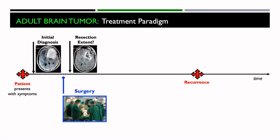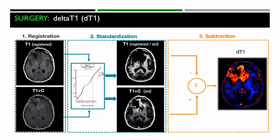After surgery, you want to know how much of the tumor was removed, because the more tumor you can remove, the better the outcome or prognosis. We've developed a method to more precisely indicate that area of resection. We apply registration and mathematical algorithms to get a specialized map called a delta T1 map that shows enhancement much better than standard imaging — not confounded by bright signal that you often see on the image acquired before injecting contrast agent.